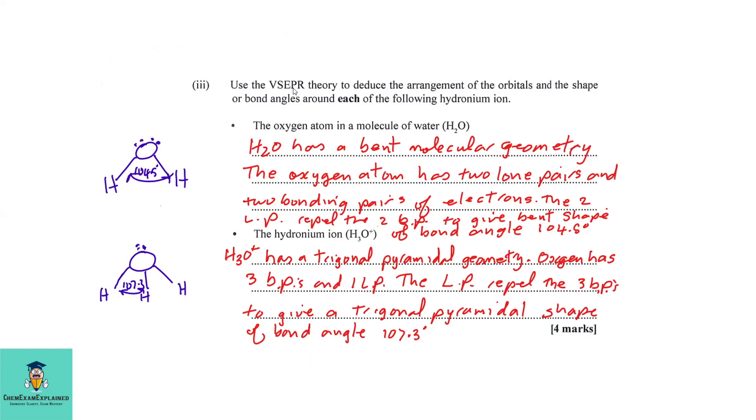Part B3: Use the VSEPR theory to deduce the arrangement of the orbitals and the shape or bond angles around each of the following hydronium ion. The oxygen atom in a molecule of water.